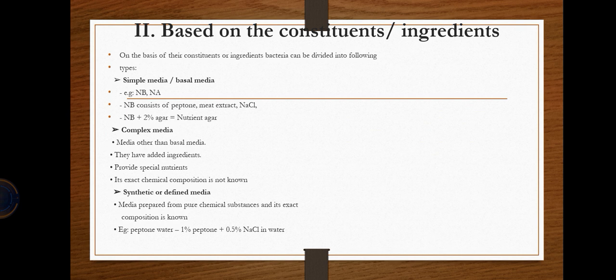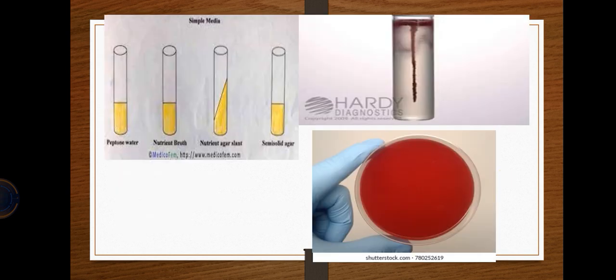Based on ingredients, we have simple or basal media. Nutrient broth (NB) consists of peptone, meat extract, and NaCl, while nutrient agar (NA) adds two percent agar. Complex media are those other than basal media, where we add special nutrients whose exact composition is unknown. Synthetic or defined media are prepared from pure chemical substances of known composition, for example peptone water consisting of one percent peptone and 0.5 percent NaCl in water.